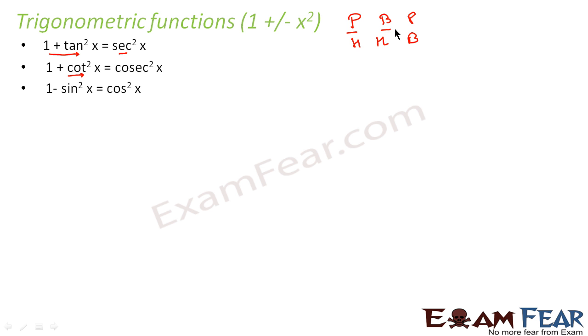That means P by B equals tan, P by H equals sin, B by H equals cos. And the reciprocals are: cosec is the reverse of sin, sec is the reverse of cos, and cot is the reverse of tan. We know this.